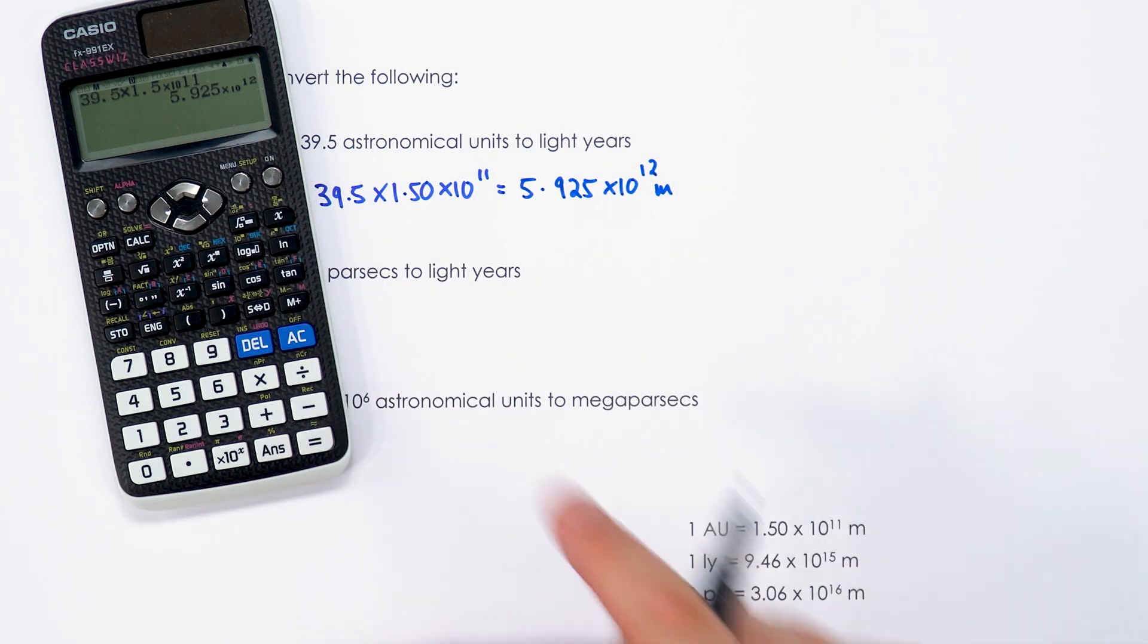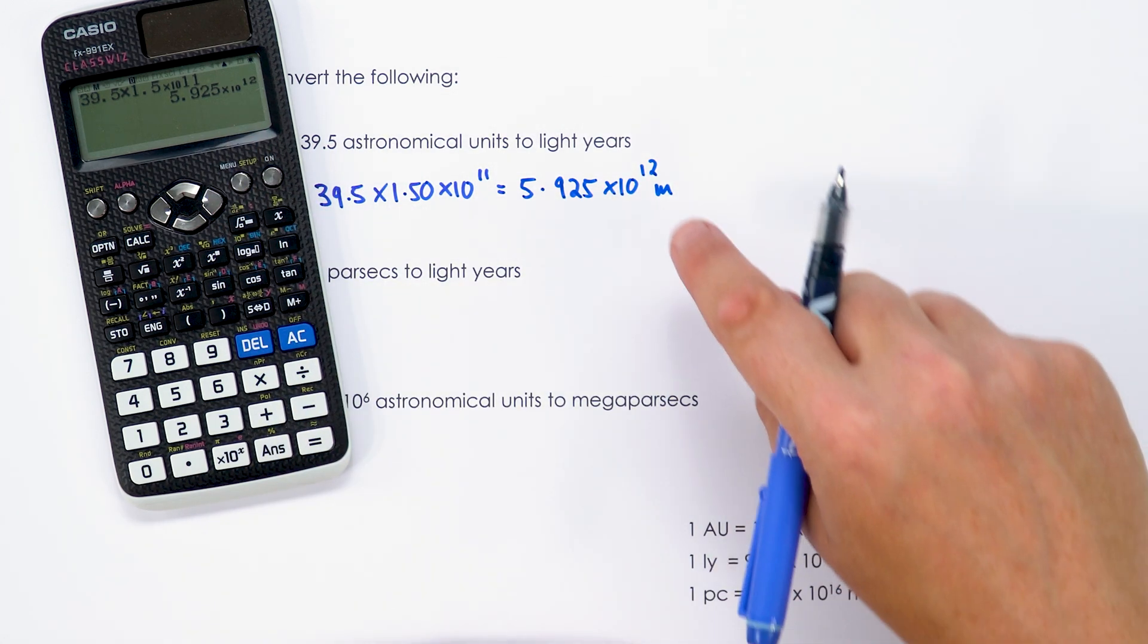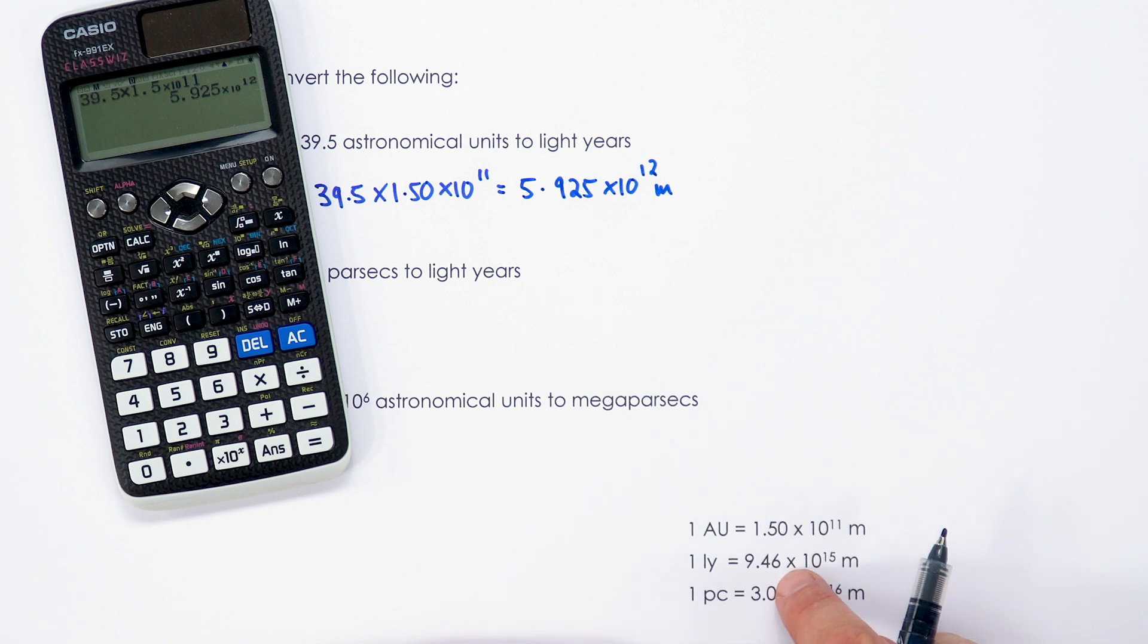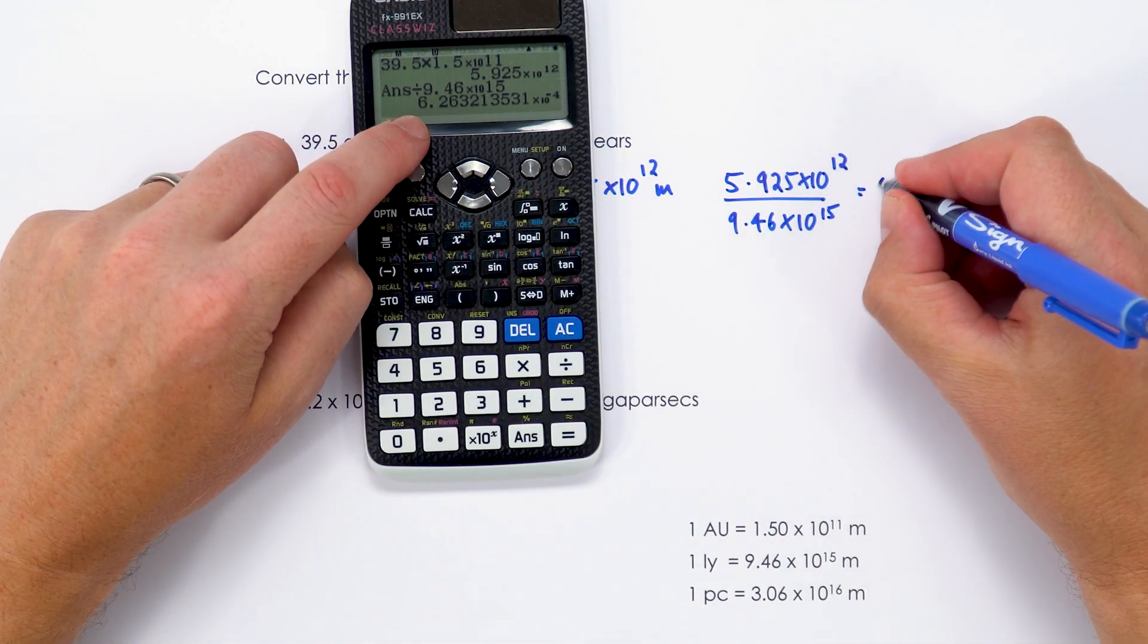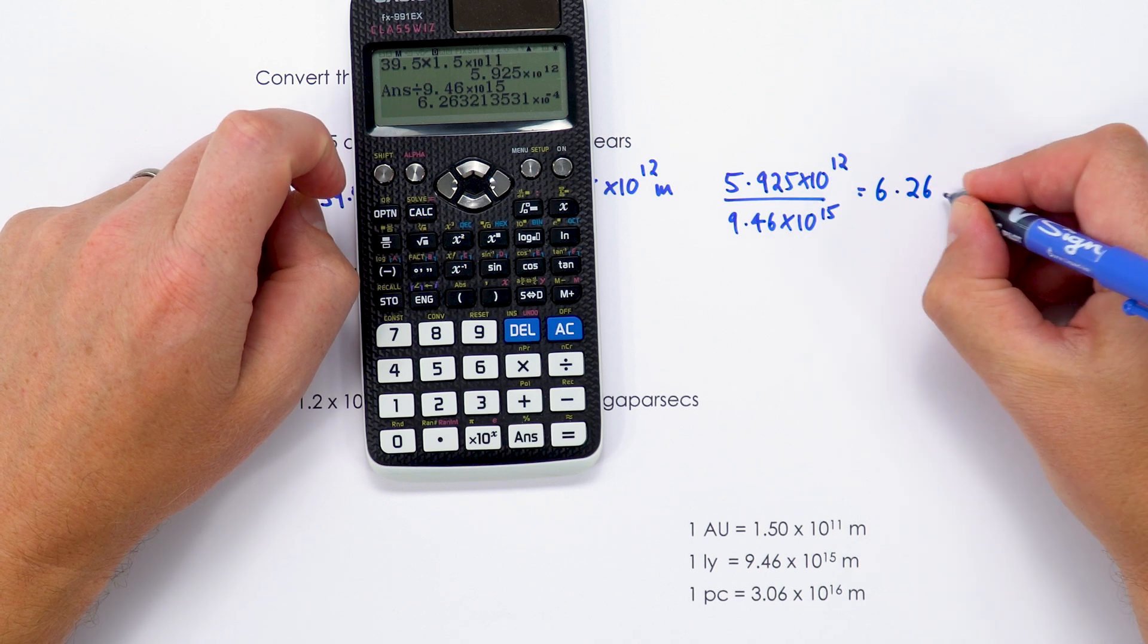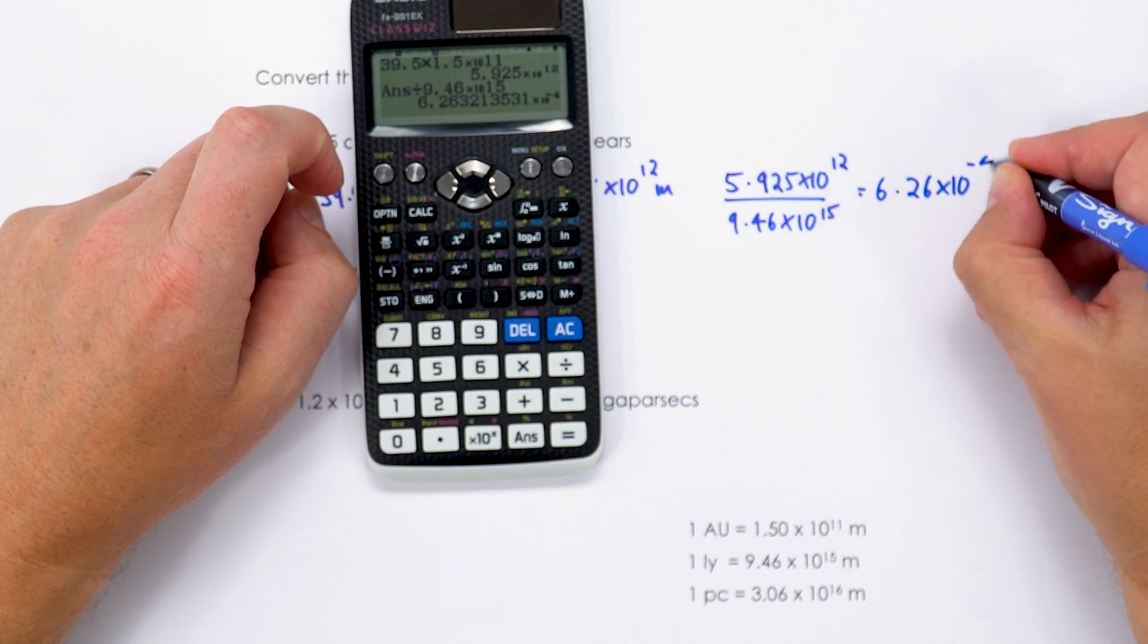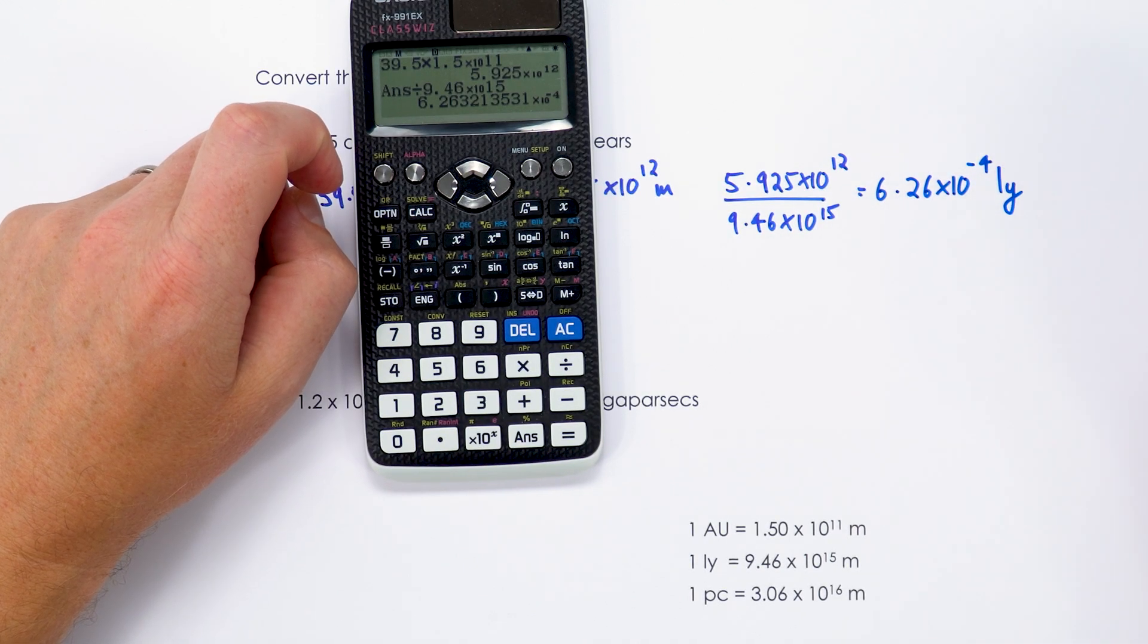So I'm just going to write down the full answer in the calculator, but now we're going to convert between metres and light-years. So we know there's that many metres in a light-year, so I'm going to divide this number by that number down there, which gives me an answer of 6.26 times 10 to the minus 4 light-years.